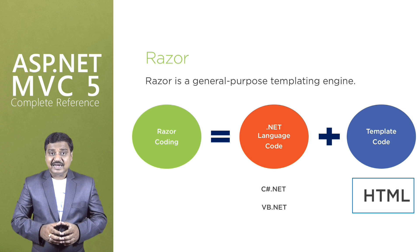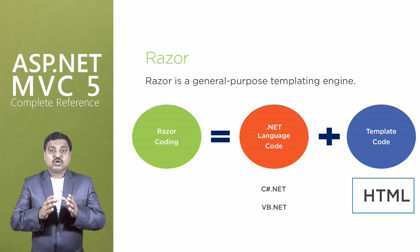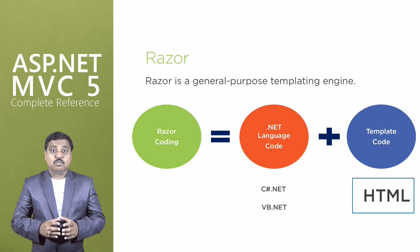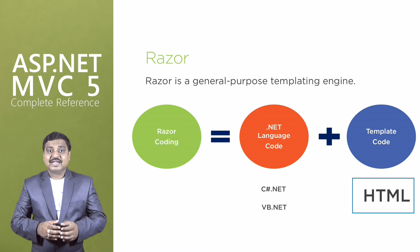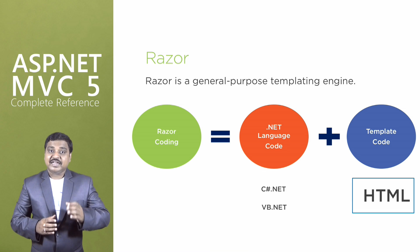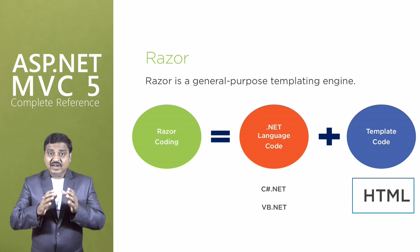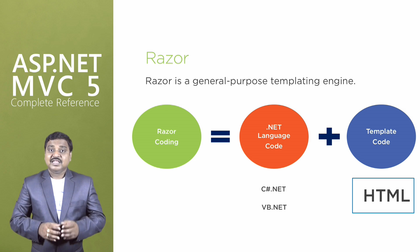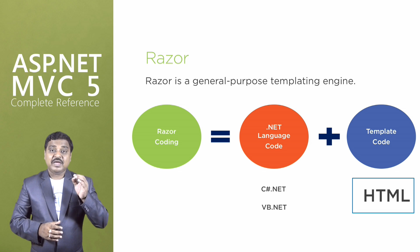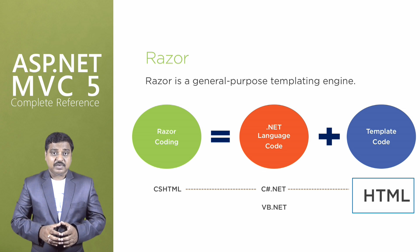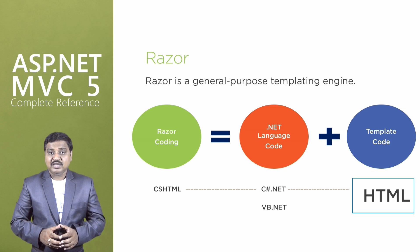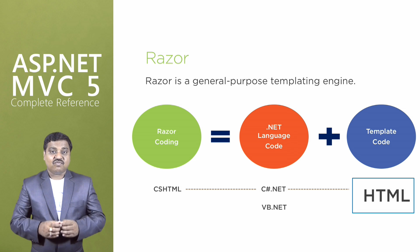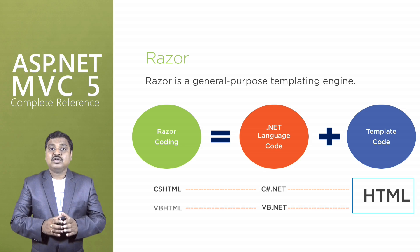We can use .NET language to get the data or to interact with a specific model, where the HTML specifies where and how the data is supposed to appear to generate the output. Whenever we use C# language for Razor coding, the extension for the template file will be .cshtml, and if VB.NET language is used, the extension will be .vbhtml.